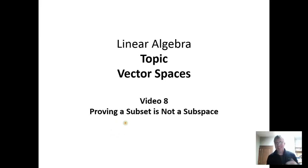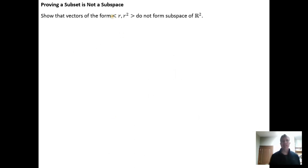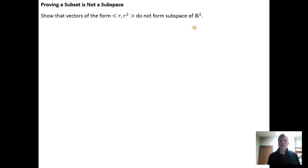In this video, we're going to go over an example of how to prove that a subset is not a subspace. In this particular case, I have all vectors of the form R, R squared, which is definitely a subset of all the vectors in R2, all the two-component vectors. To show that something isn't a subspace, we just need to show that it violates closure — either closure under scalar multiplication, or closure under vector addition.